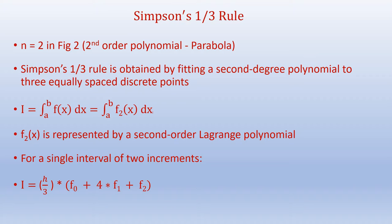For a single interval of two increments, by substituting the Lagrange polynomial into the previous equation, we get I equals h over 3 times f_0 plus 4 times f_1 plus f_2.